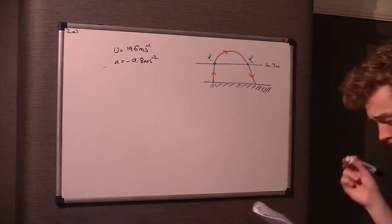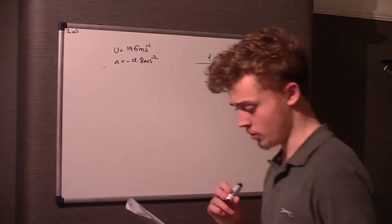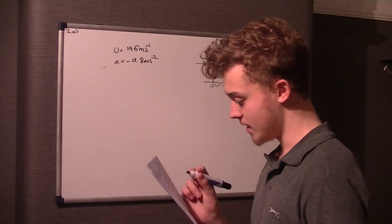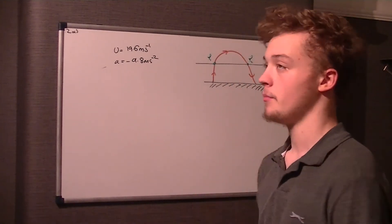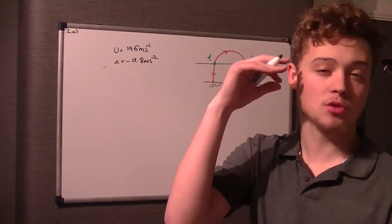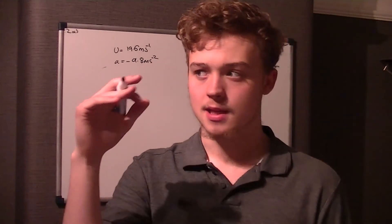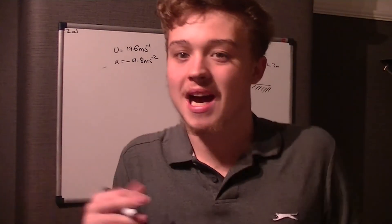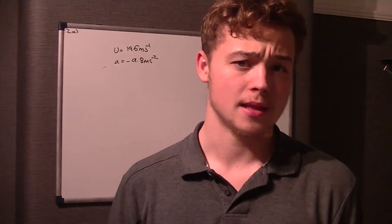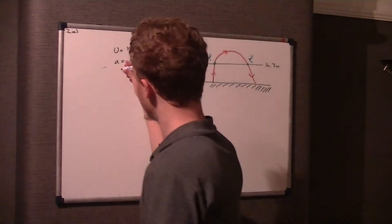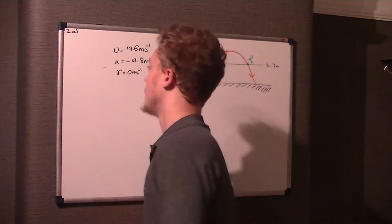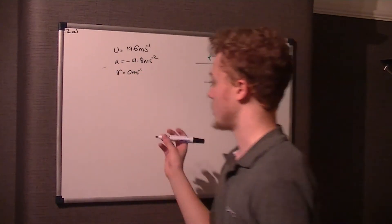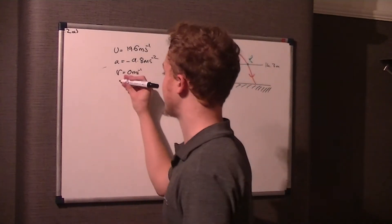Modeling the stone as a particle, which you generally always do, find the greatest height above O reached by the stone. Now we can add another thing to that. Because it's the greatest height, if it's still traveling upwards at a speed, then it's still going to be gaining height. So therefore the highest point it will reach is when the speed is zero, the final speed is zero. So V is equal to zero meters per second.